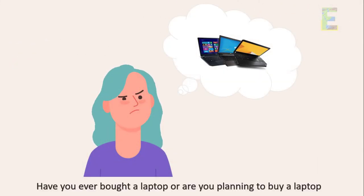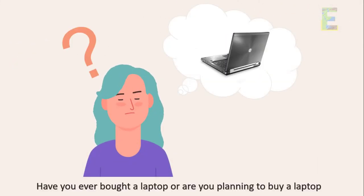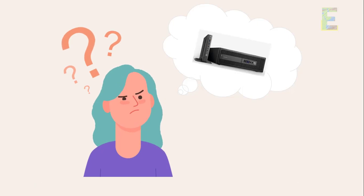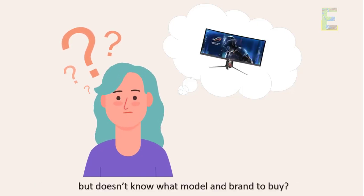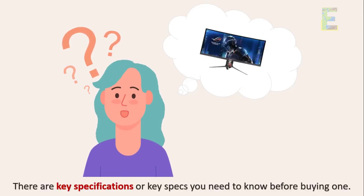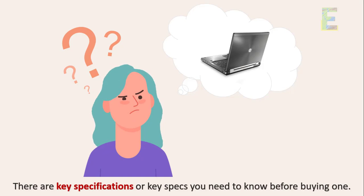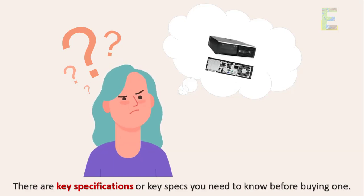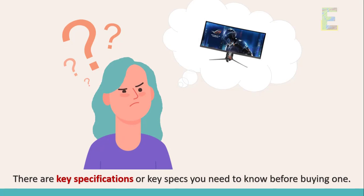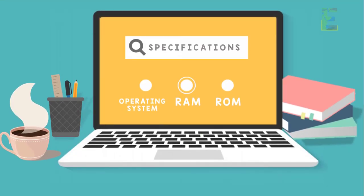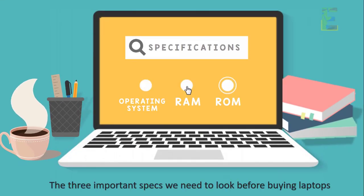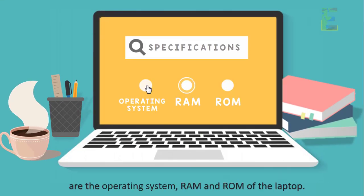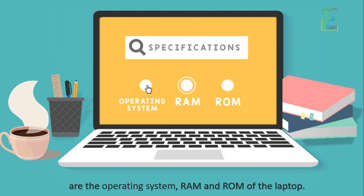Have you ever bought a laptop, or are you planning to buy one but don't know what model and brand to buy? There are key specifications you need to know before buying one. The three important specs to look at before buying a laptop are the operating system, the RAM, and the ROM of the laptop.